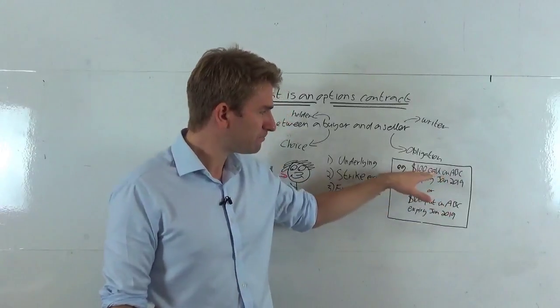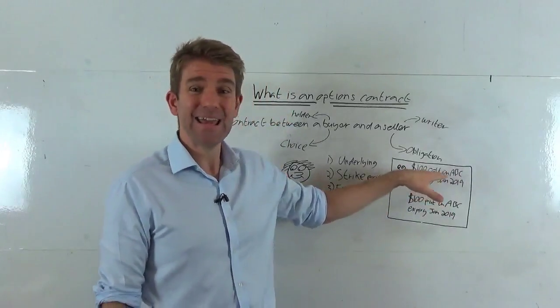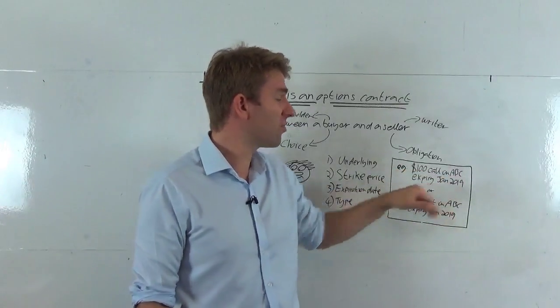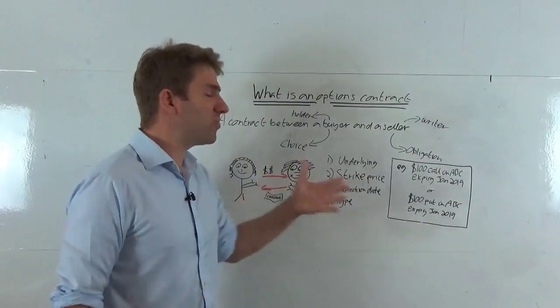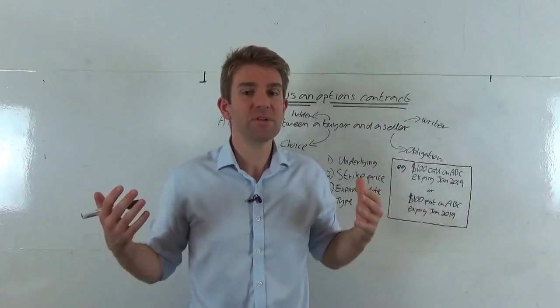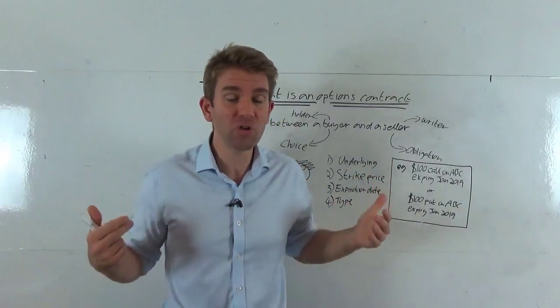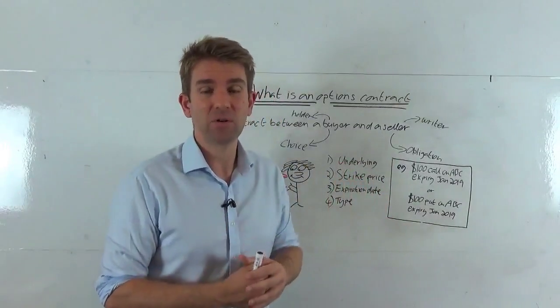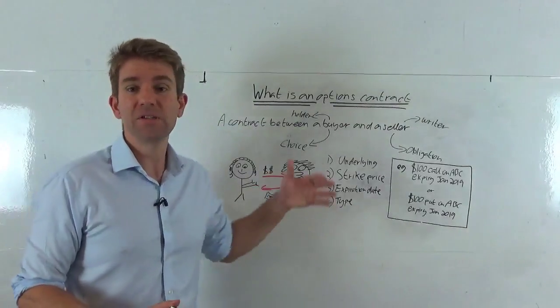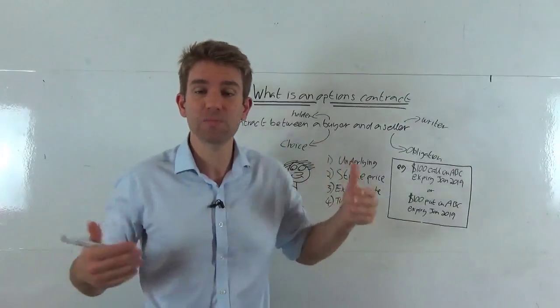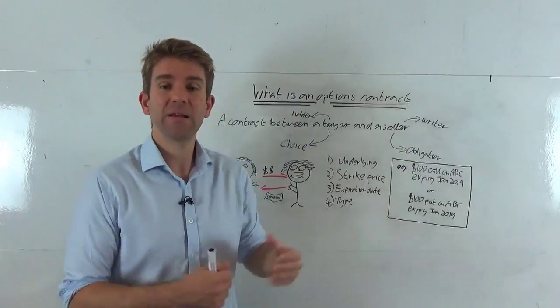If you look at the same example here. Let's say in January, 2019, the price of that stock was ABC stock was $80. The options worthless, right? Because who wants to buy a stock at $100 that is currently $80. So the seller is very happy because he's got that premium. He's sold that option. The option is now expired worthless. The buyer's sad. The seller's happy.